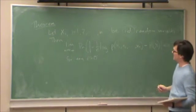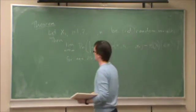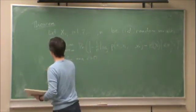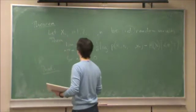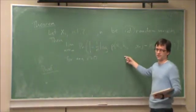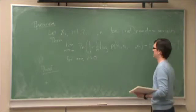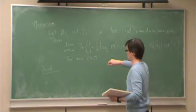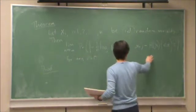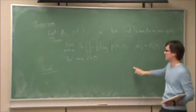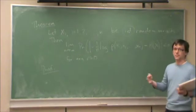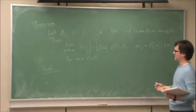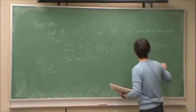So for one thing, before we start proving, you should immediately notice that this is basically the statement of the weak law of large numbers, except with some odd substitutions. For one thing, limit N goes to infinity of something being less than epsilon for any epsilon greater than 0, immediately you should recognize this as the weak law of large numbers. But what do we have here?